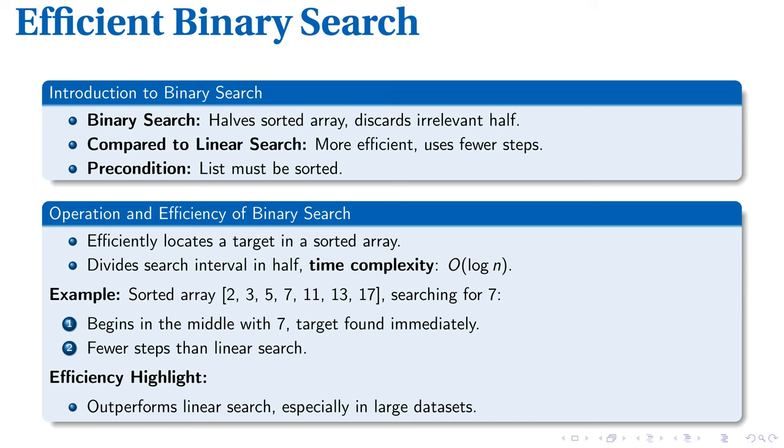Consider the sorted array 2, 3, 5, 7, 11, 13, 17. When searching for the number 7, binary search starts in the middle, and voila! Our target is found instantly.